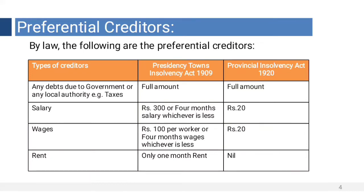In case of provisional salary, Rs. 20. For wages, Rs. 100 per worker or 4 months wages, whichever is less. In case of provisional wages, Rs. 20. For rent, in case of presidency, only 1 month rent is allowed.